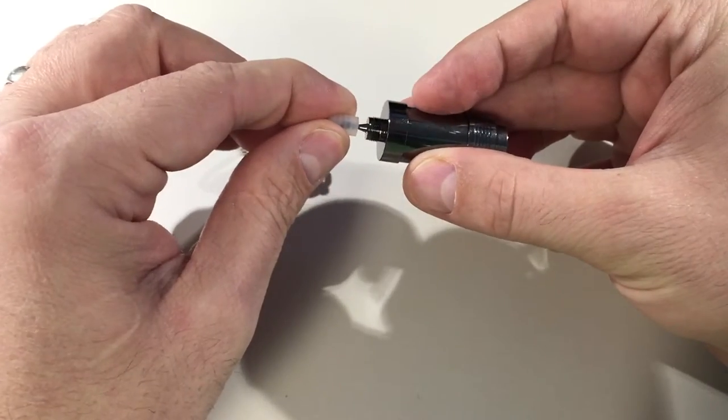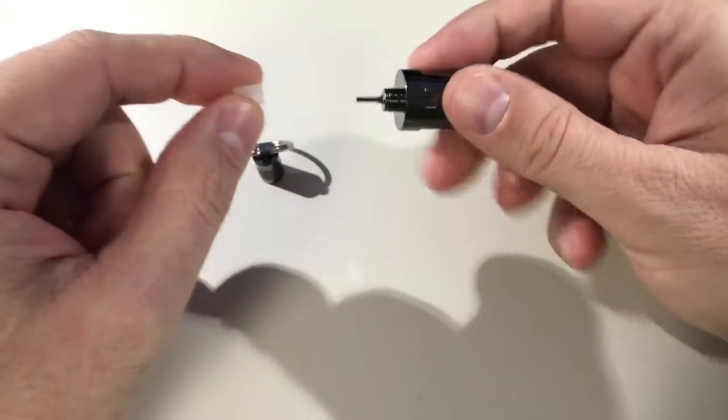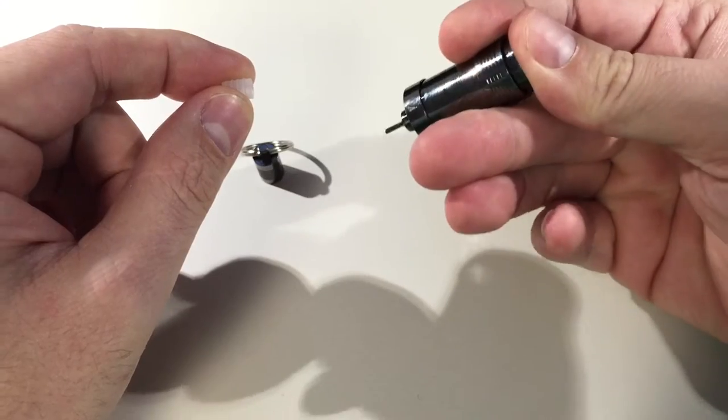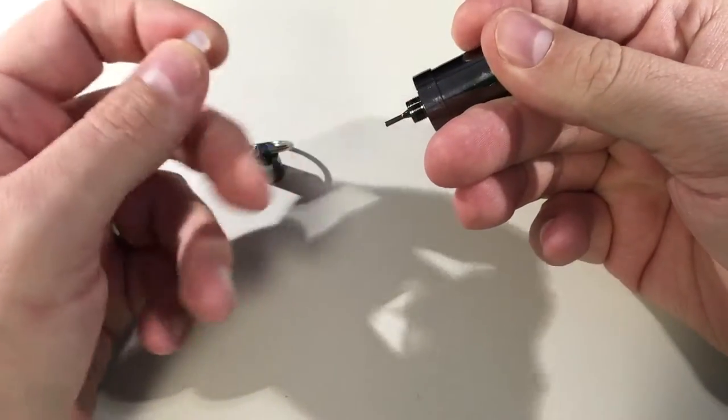Then you pull off this rubber protector and push the button. I don't have any oil in here, but you push the button and an oil drop will come out.